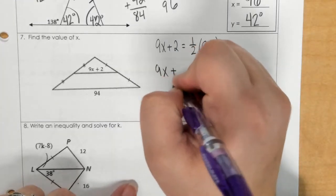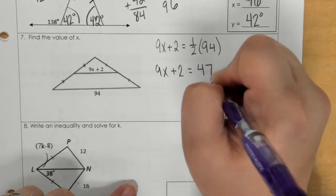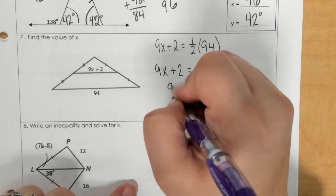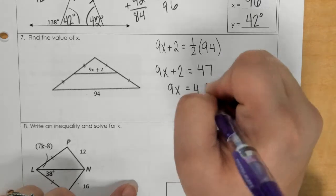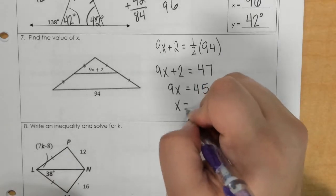So 9x plus 2 equals 47. Subtract that 2. Get 45. And then lastly, divide by 9, x is 5.